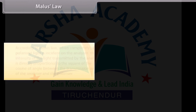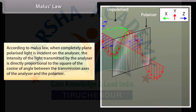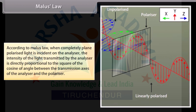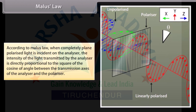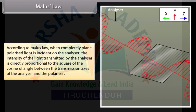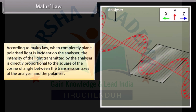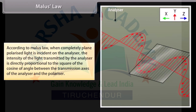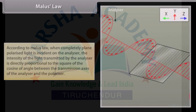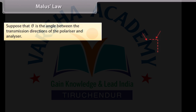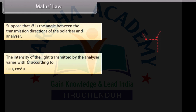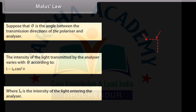Malus's Law. According to Malus's Law, when completely plane polarized light is incident on the analyzer, the intensity of the light transmitted by the analyzer is directly proportional to the square of the cosine of angle between the transmission axes of the analyzer and the polarizer. Suppose theta is the angle between the transmission directions of the polarizer and analyzer. The intensity varies with theta according to I = I₀·cos²θ, where I₀ is the intensity of the light entering the analyzer.